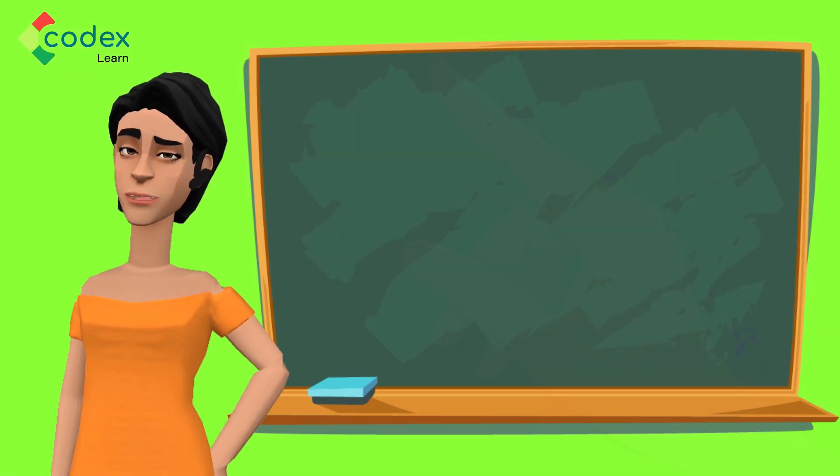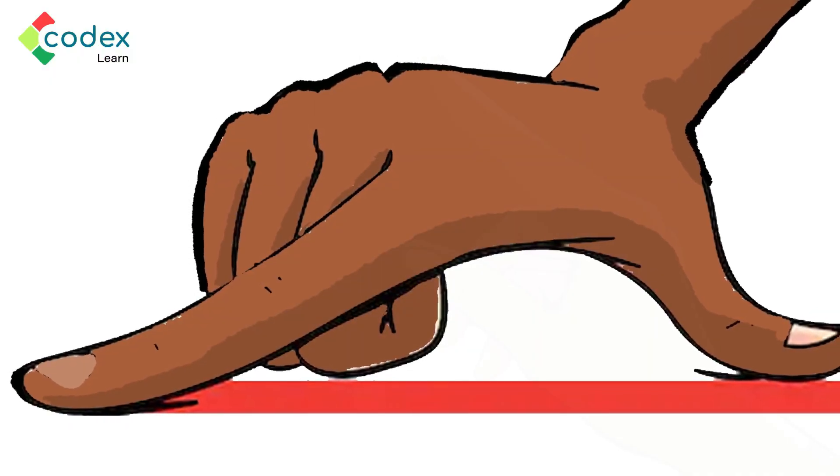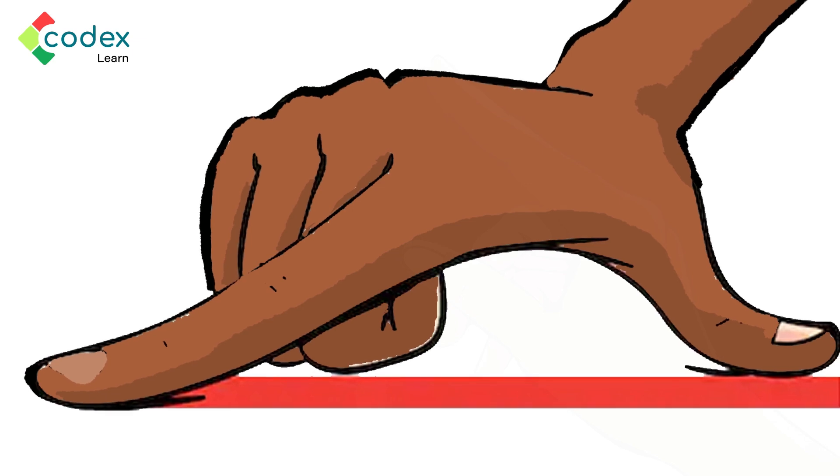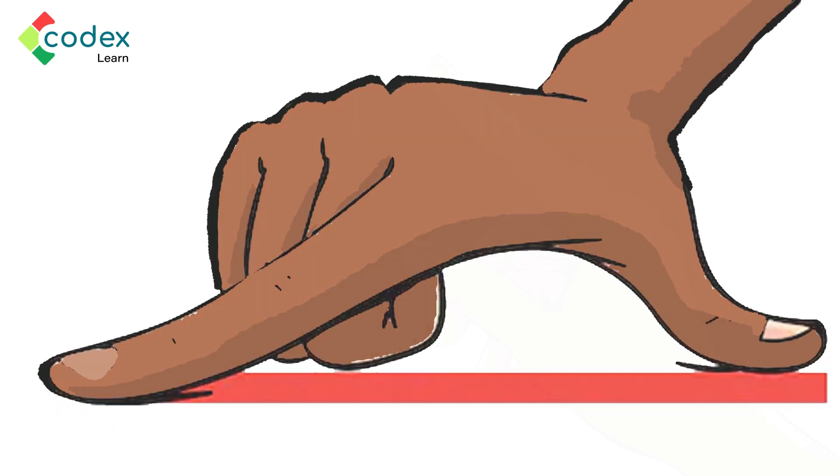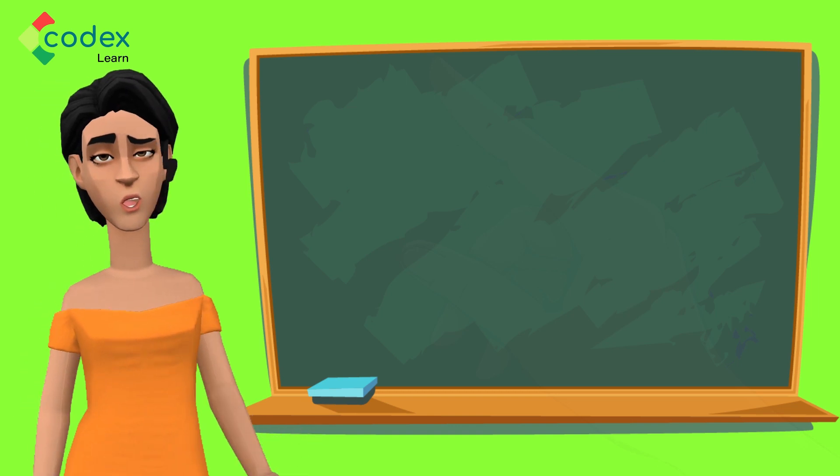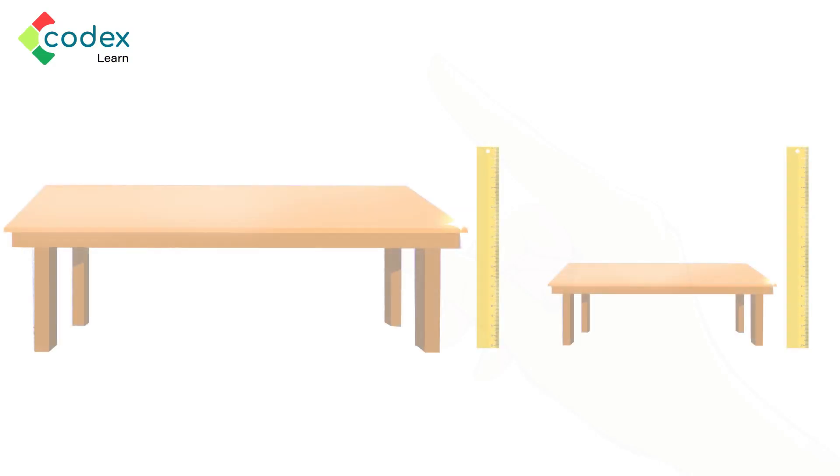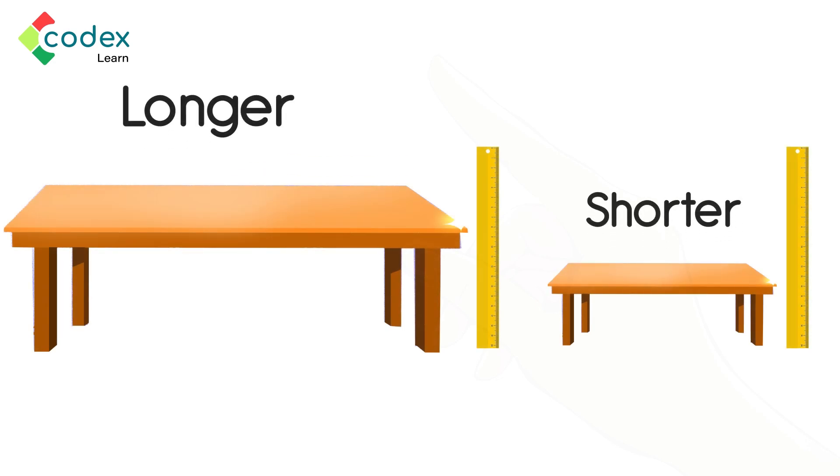Measuring the length of objects with our body parts is easy. You can start from one end of the object and count how many foot or hands it takes to get to the other end of the object. Measuring the length of objects also helps us to compare and know if an object is longer or shorter than another object. For example, we can tell which is shorter or longer between two tables by measuring the length of the tables.